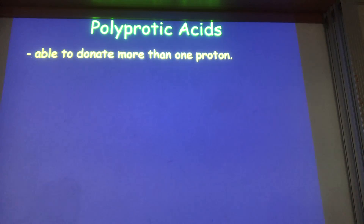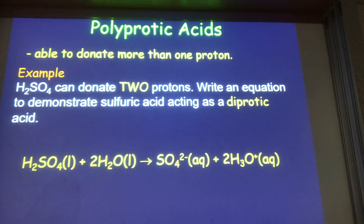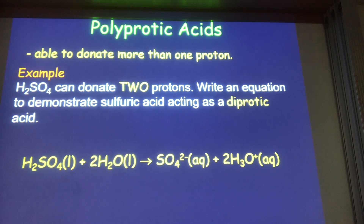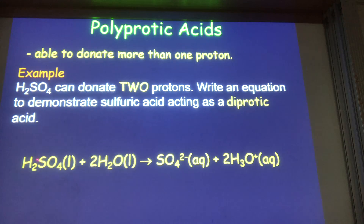Polyprotic acids are substances which are able to donate more than one proton. Sulfuric acid has two hydrogens it can donate — it is a diprotic acid. Each of the two H⁺s can be lost, so we can react sulfuric acid with two water molecules. Each water molecule accepts a proton to turn into H₃O⁺, so the sulfuric acid ends up as sulfate and we end up with two H₃O⁺ ions.